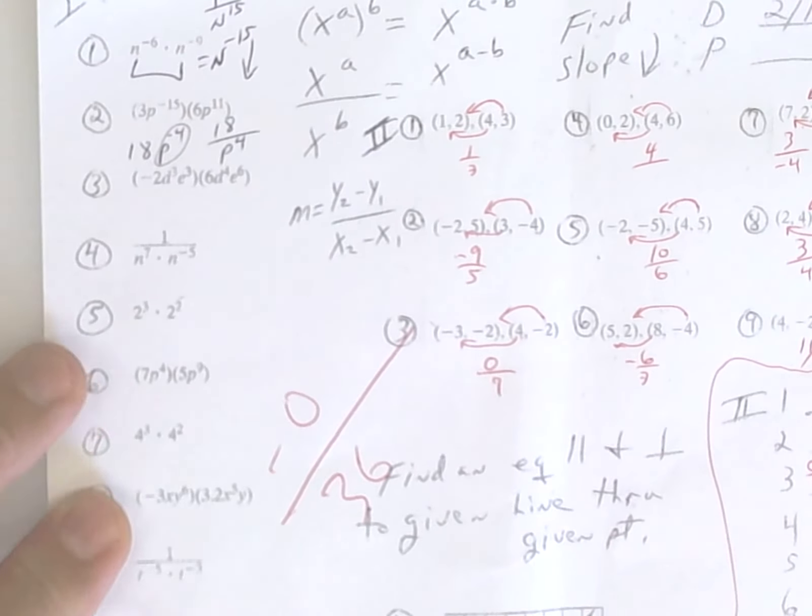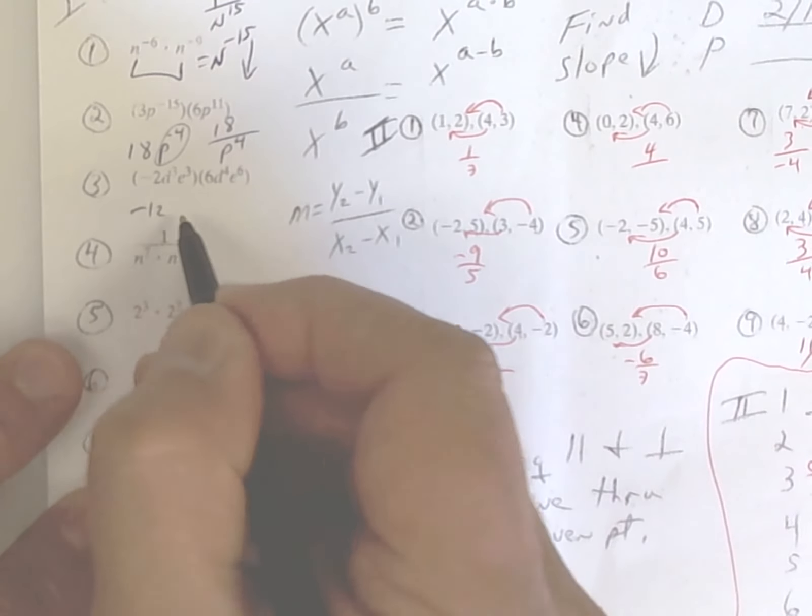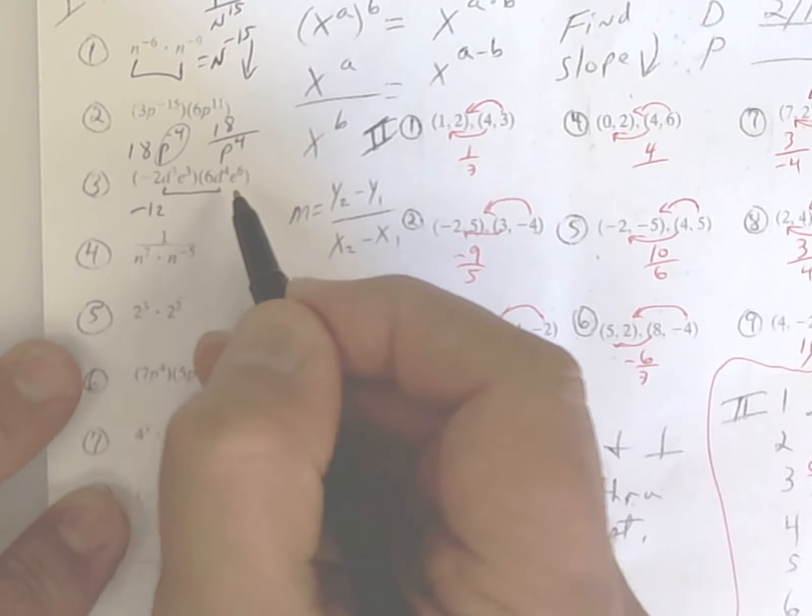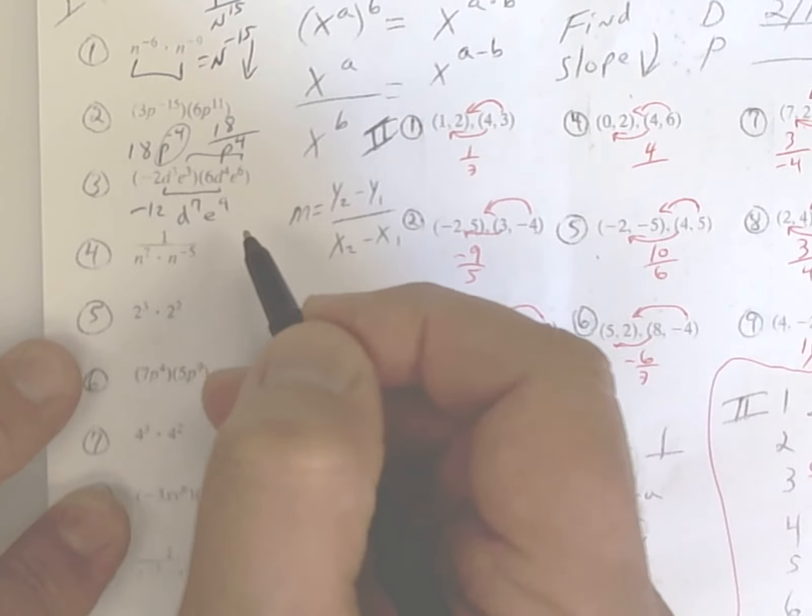The next one. Negative 2 times 6 is negative 12. d3 and d4 makes d7. 3 and 6, you're going to add that up and get e9. And that's the answer.